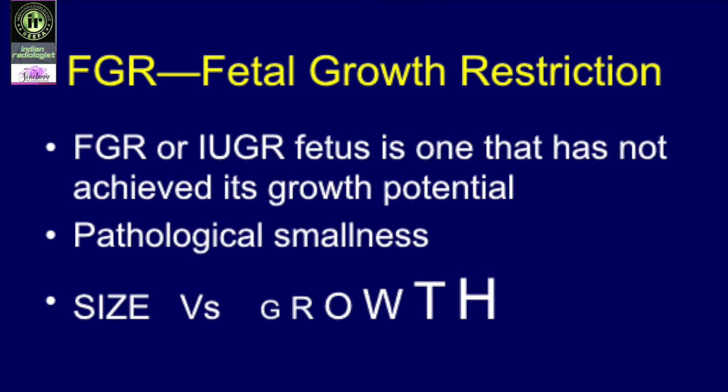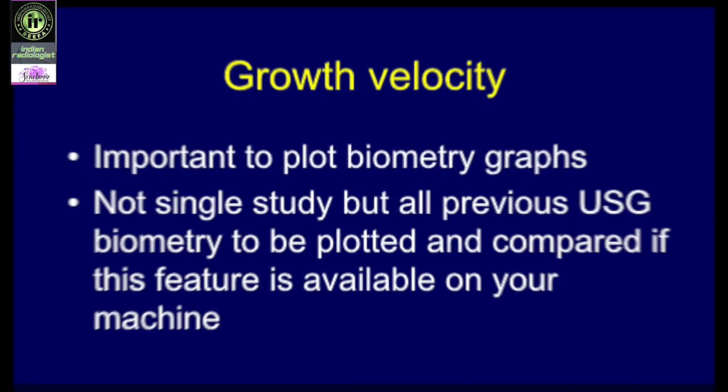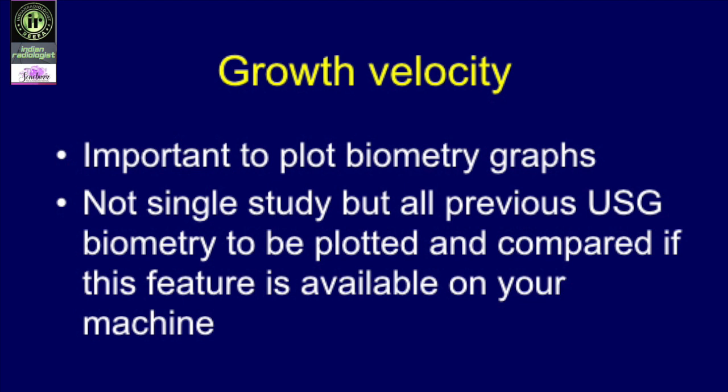FGR, or IUGR, is the fetus that has not achieved its growth potential — it is pathological smallness, not physiological. It is not small because the parents are genetically small; it has failed to achieve its growth potential. There is a difference between absolute size and growth. The fetus should steadily increase in size during pregnancy, which is why growth velocities are important. It is important to plot biometry graphs across multiple ultrasound studies; if this feature is available on your machine it helps to define growth disorders better.